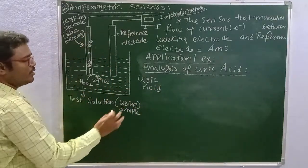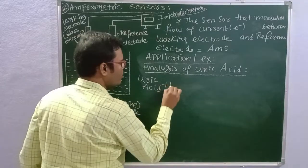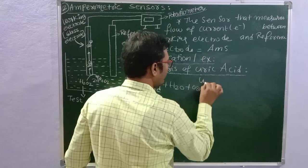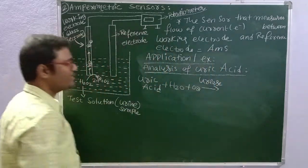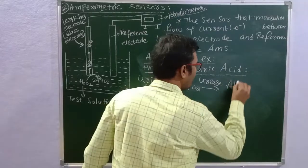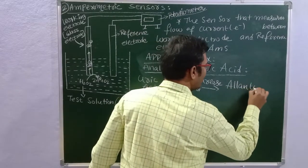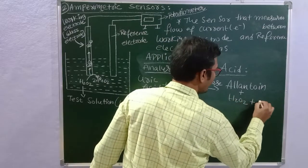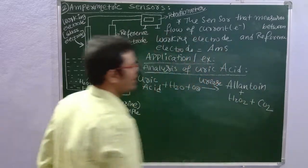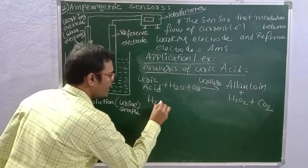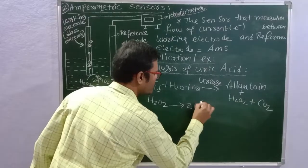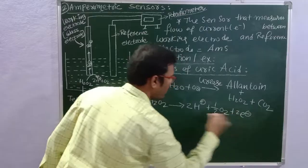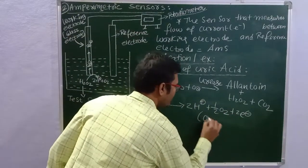For example, in a beaker with a urine sample, uric acid reacts with water and oxygen in the presence of the enzyme urease. Urease acts on the uric acid and converts it into allantoin, a nitrogenous compound, releasing hydrogen peroxide and carbon dioxide gas. The hydrogen peroxide then breaks down into hydrogen ions, oxygen, and two electrons through an oxidation reaction.